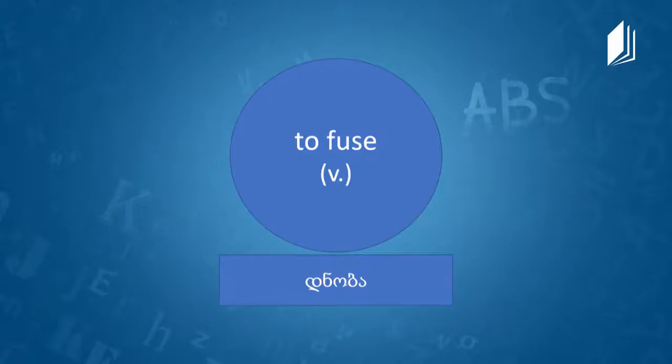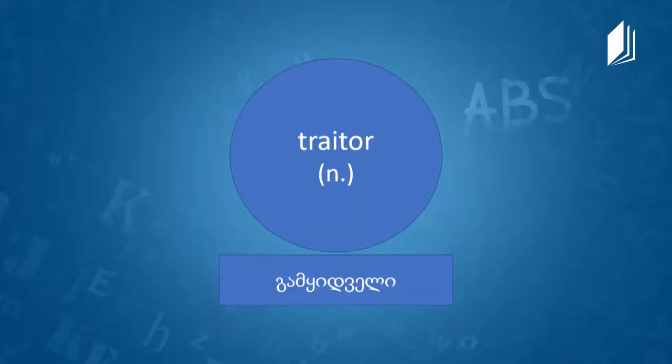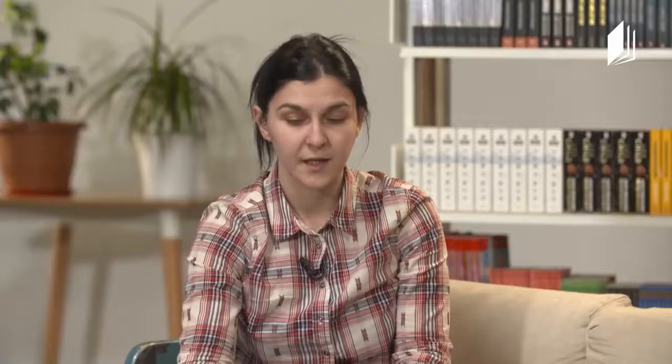Our next word is "to fuse" — to join together. Our next word is "traitor" — a person who betrays another, a cause, or any kind of trust.